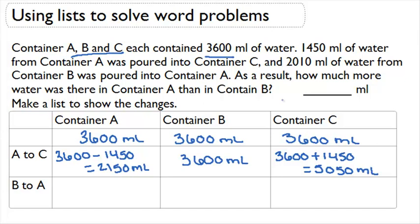All right. Now the next step. 2,010 milliliters of water from container B was poured into container A. This time container C isn't changing. So we're going to leave our total in container C as 5,050 milliliters.